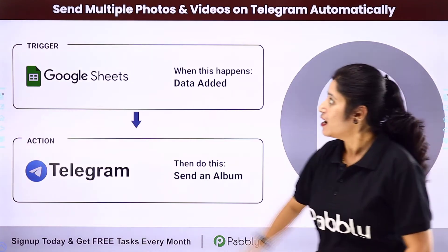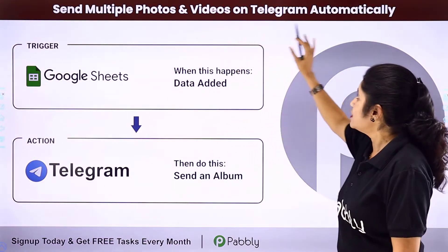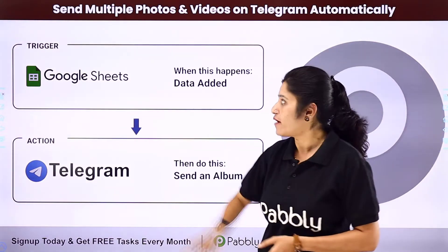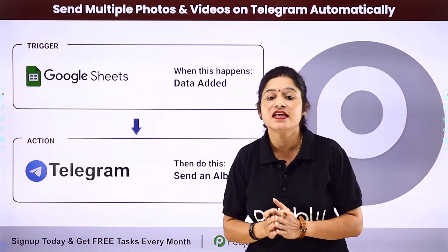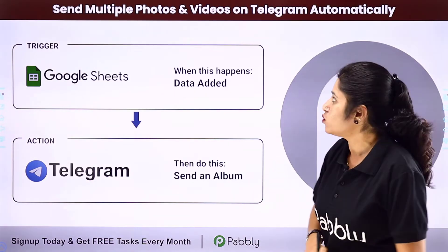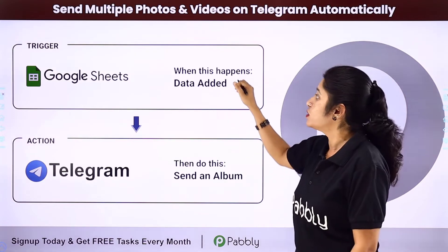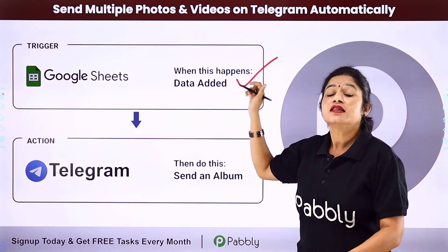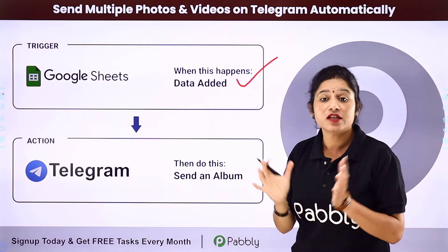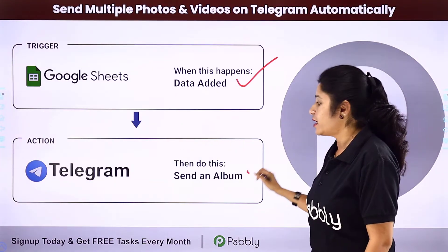In this video we are going to learn how you can send multiple photos and videos on Telegram automatically. Let's suppose you have created a Google Sheet in which you are adding some photo and video URLs. Whenever you add multiple photo and video URLs to your Google Sheet, automatically the photos and videos should be clubbed together and grouped as an album, then shared on your Telegram channel.